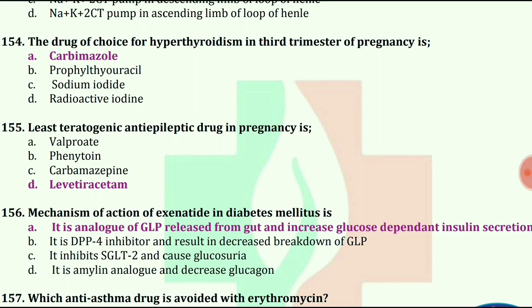Mechanism of action of exenatide in diabetes mellitus is it is an analog of GLP released from gut and increases glucose-dependent insulin secretion.